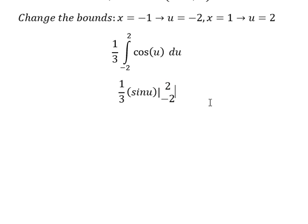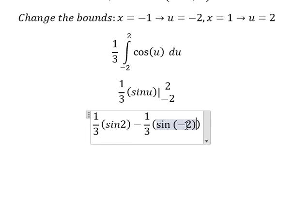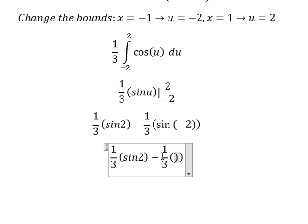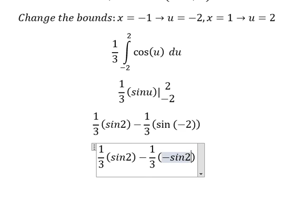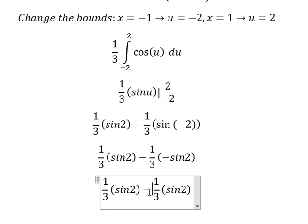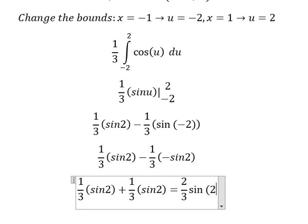And now we have the final answer. So I will put 2 in here and -2 in here. We know that sin(-2), that's negative sin(2). Negative with negative, you get positive. And we simplify, that's 2/3 sin(2).